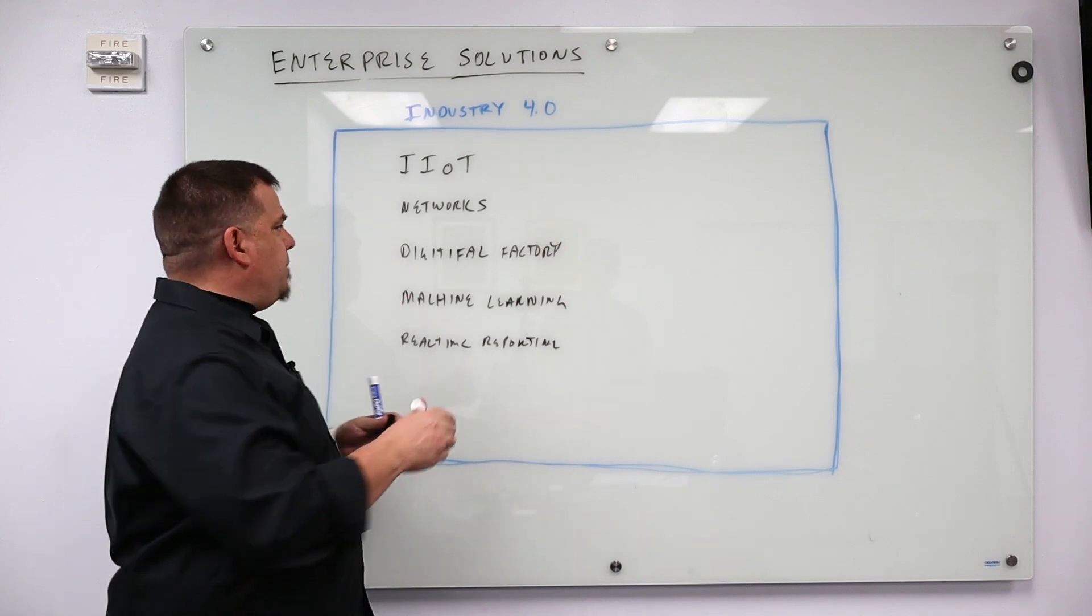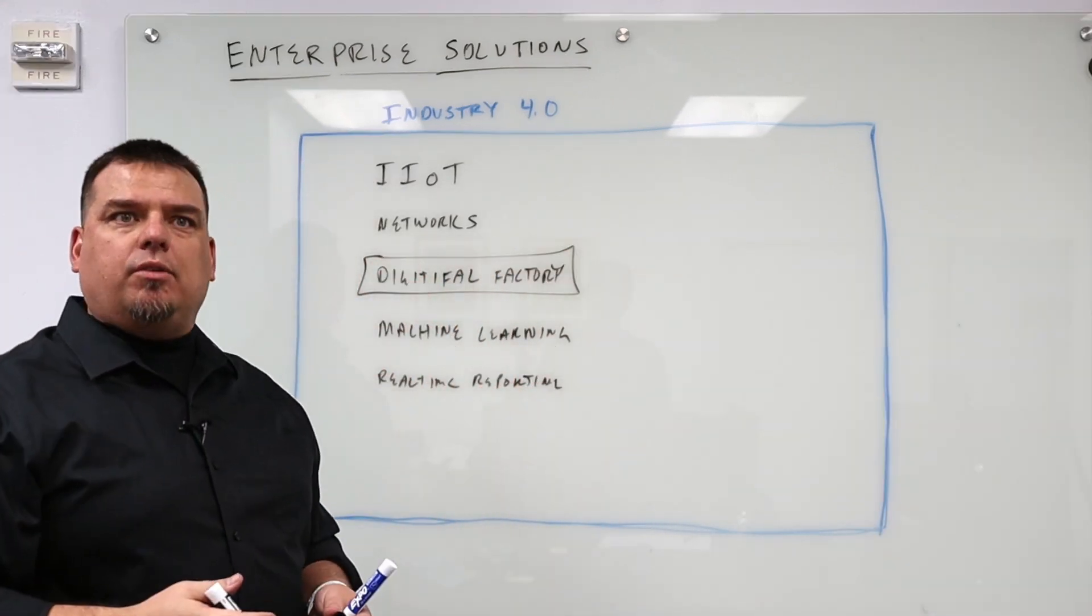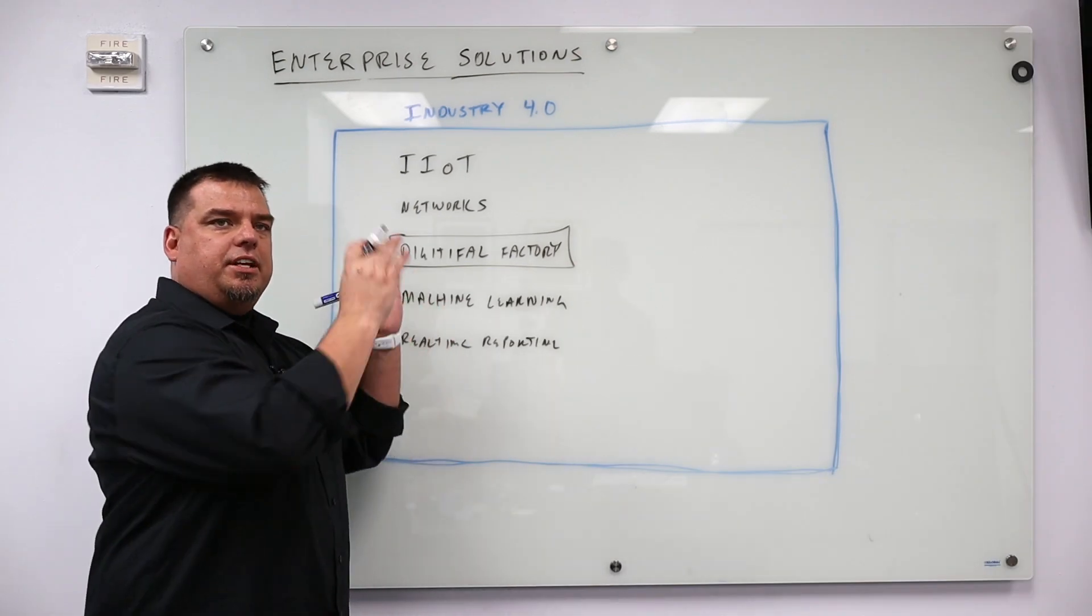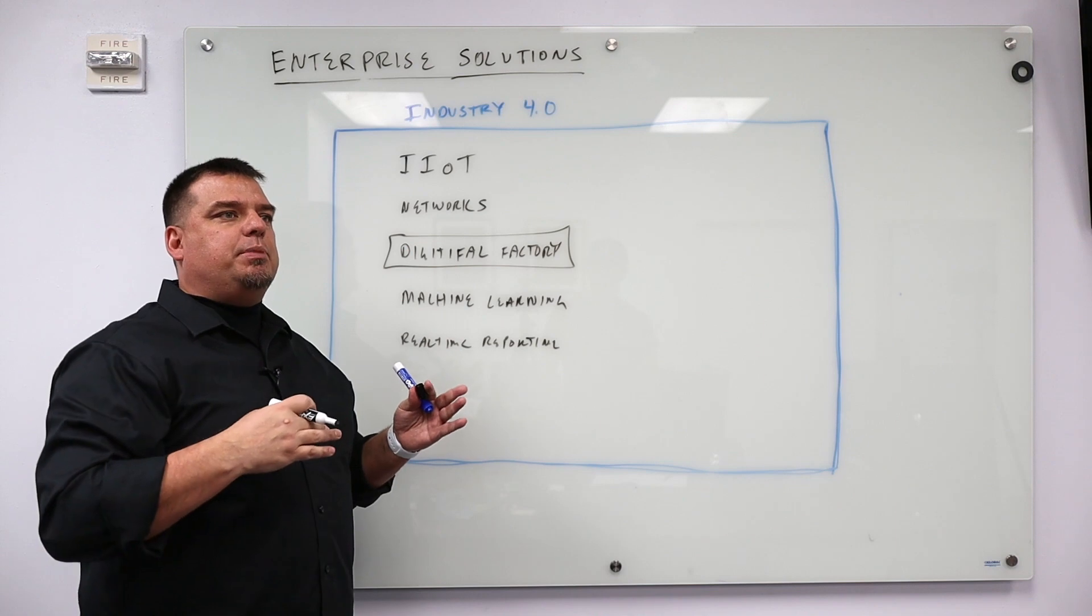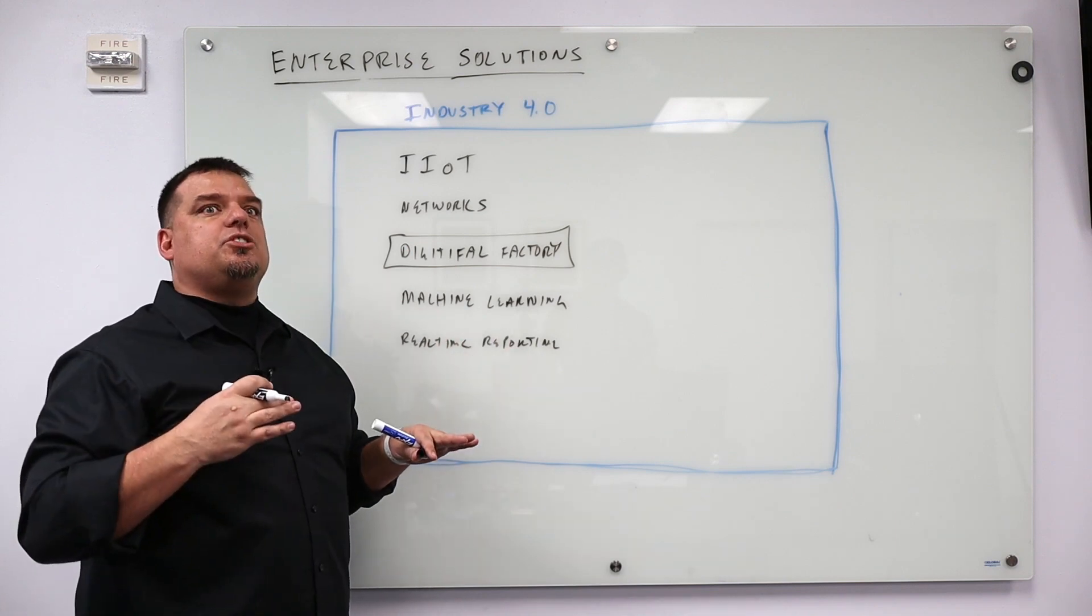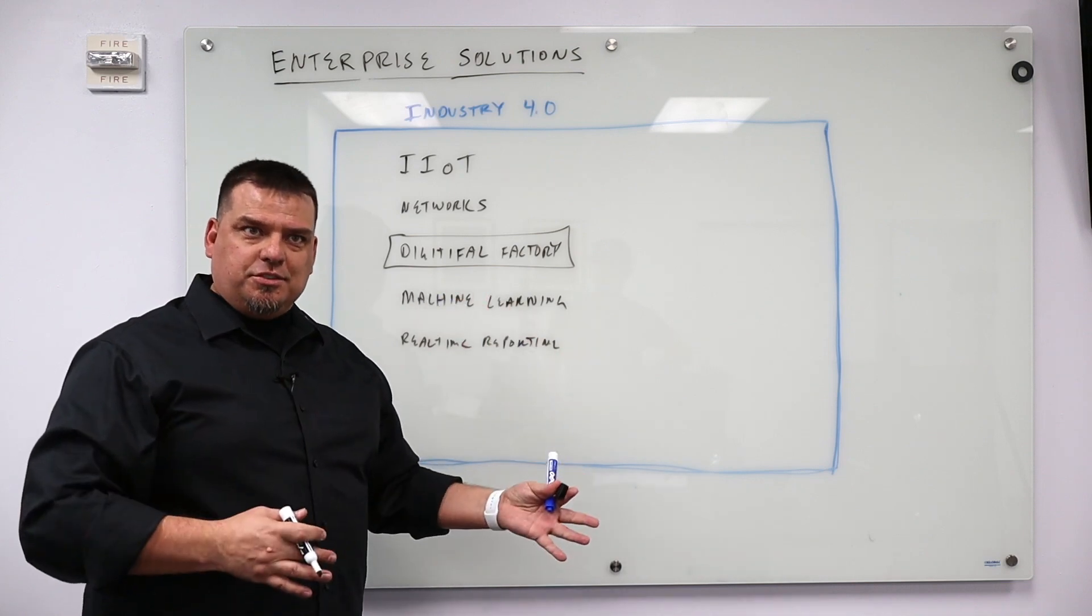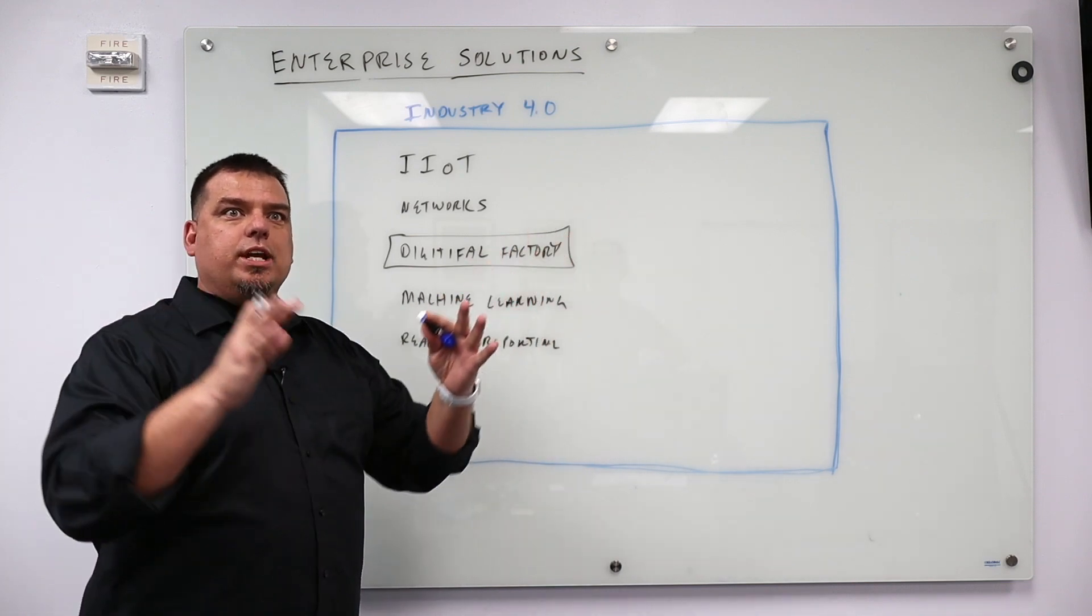Digital factories weren't even possible until this time, this space and time that we're in right now. We learned the capabilities of Industry 4.0 by going through the personal digital transformation when the internet came out and when cellular telephones came out, where the world got really, really small.